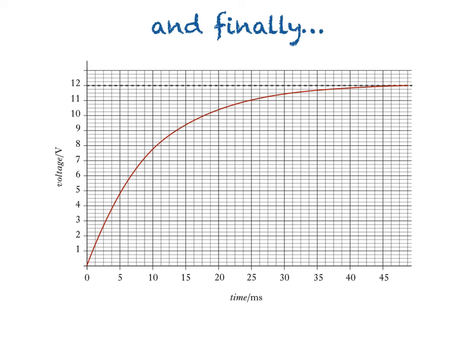Remember that before, when the capacitor was discharging, the voltage across it decreased by 63% to 37% of the supply voltage in one time constant. Here, though, the voltage increases from 0 volts to 63% of the supply voltage in one time constant.